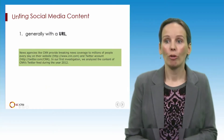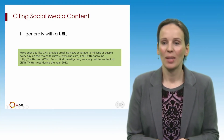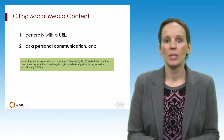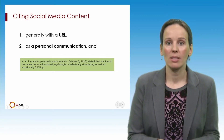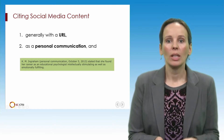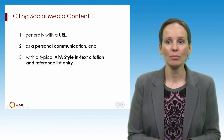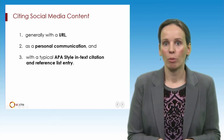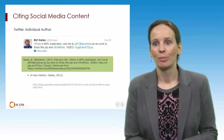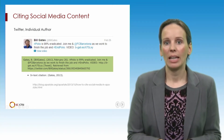You have three options. First, you can use a simple URL, and right here you can see an example of what this could look like. The second option is a personal communication approach. If you quote specific information from social media but your readership will be unable to access that particular content — for example because of privacy settings or because it's a private message — you can cite the content as a personal communication, and here's an example of what this could look like. Third, if you quote specific retrievable information from social media, provide an in-text citation and a reference list entry. Here is an interesting example that shows a Twitter message distributed by Bill Gates and the related recommended citation.